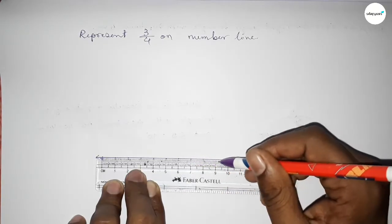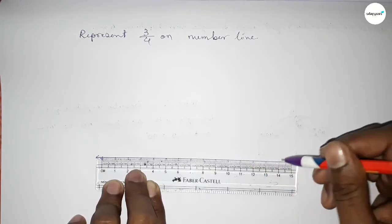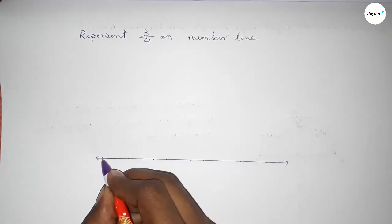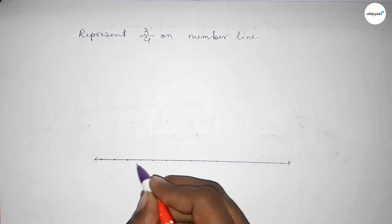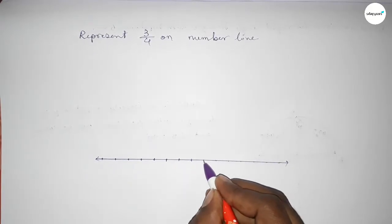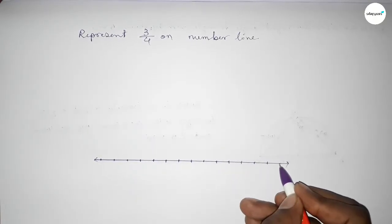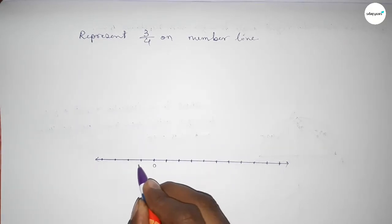Now mark the numbers with deep color to understand perfectly. We have to mark the numbers on the line, starting here.